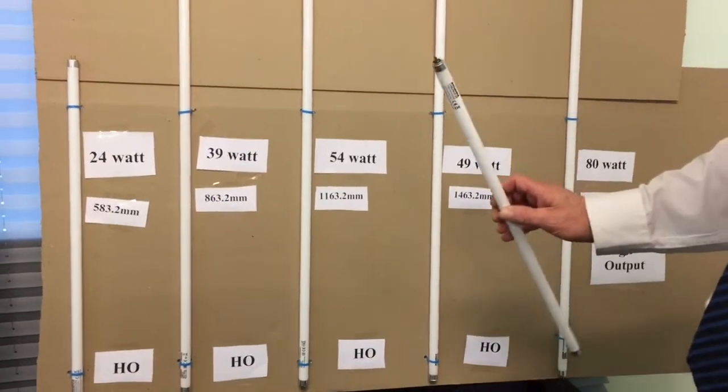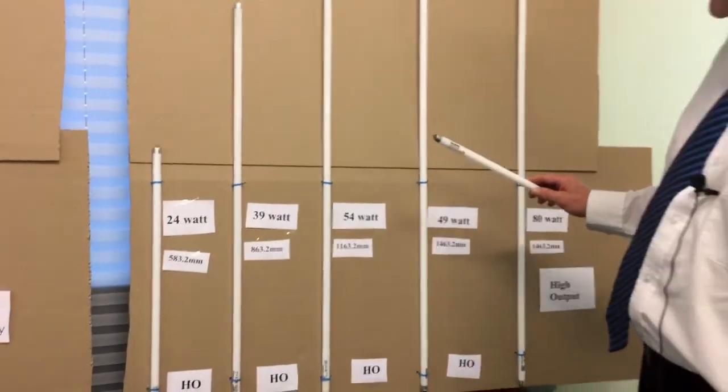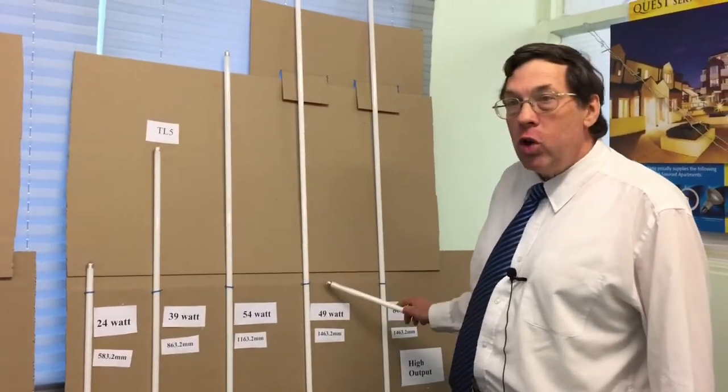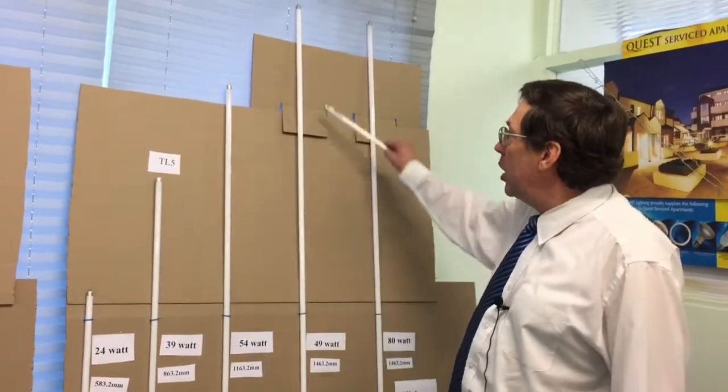The point to note about the HO range is that the 54 watt is actually shorter than the 49 watt.